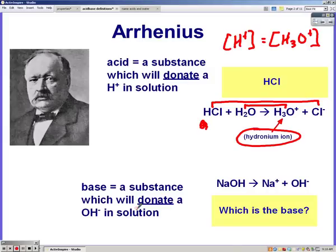According to Arrhenius, a base is a substance that donates hydroxide ions in solution. So NaOH is a base because when it breaks up it produces sodium ions and hydroxide ions.